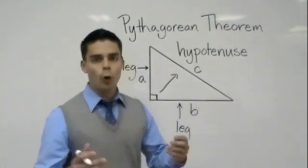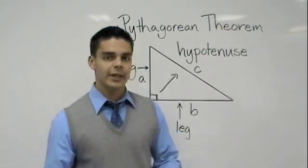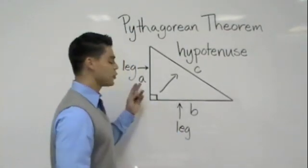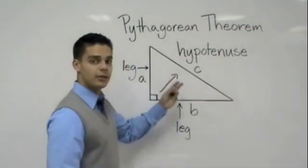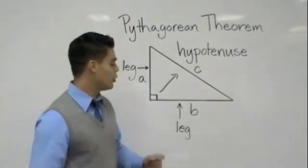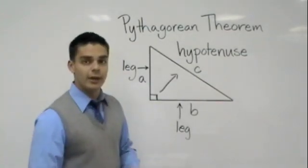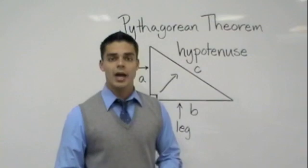So what is the whole point of Pythagorean Theorem? It allows us to be able to solve for A, B, or C, or any missing side when we know there's a right angle. I'm going to go ahead and introduce you guys to the actual formula.